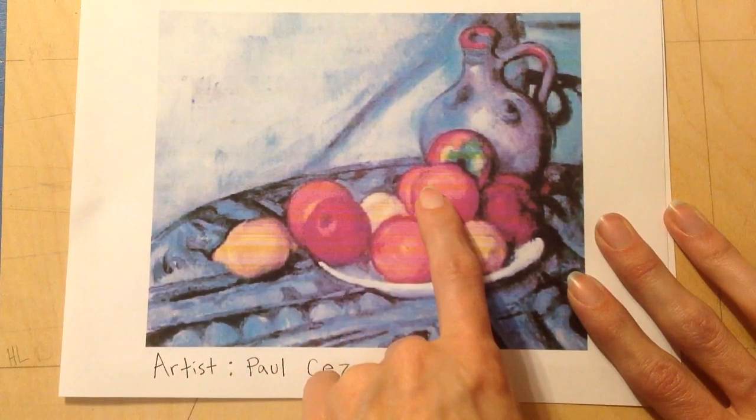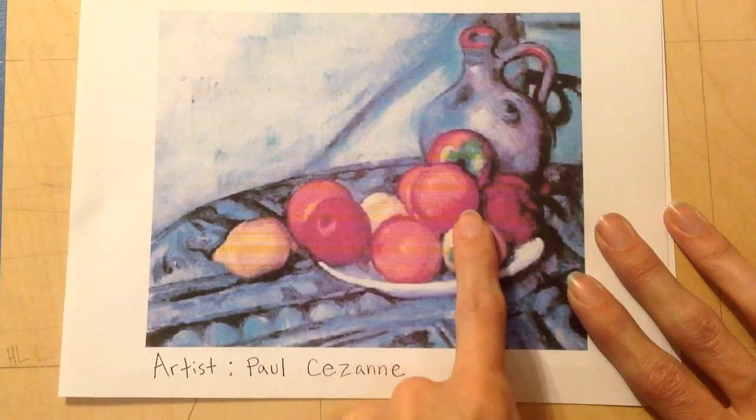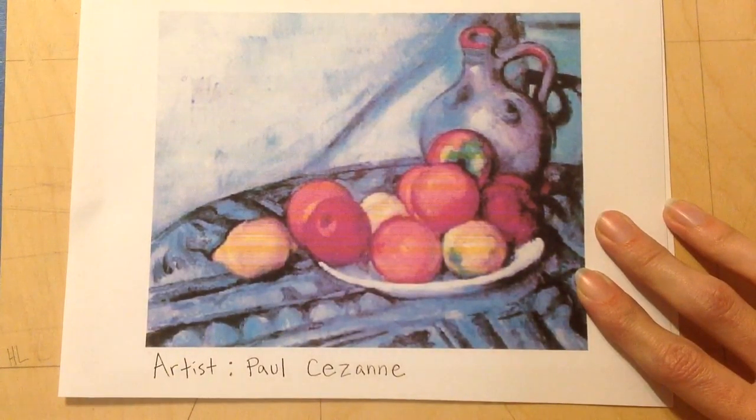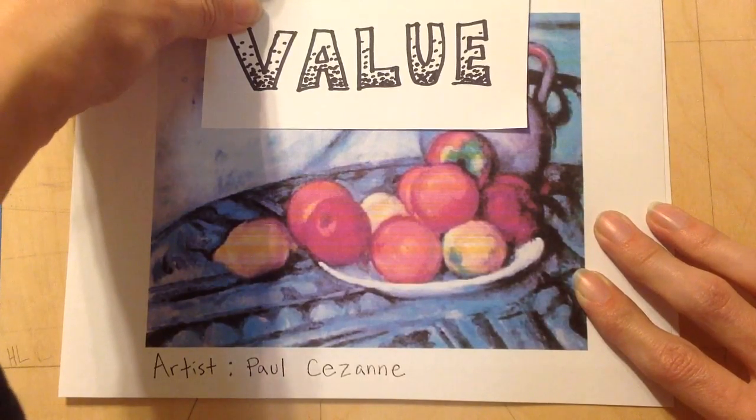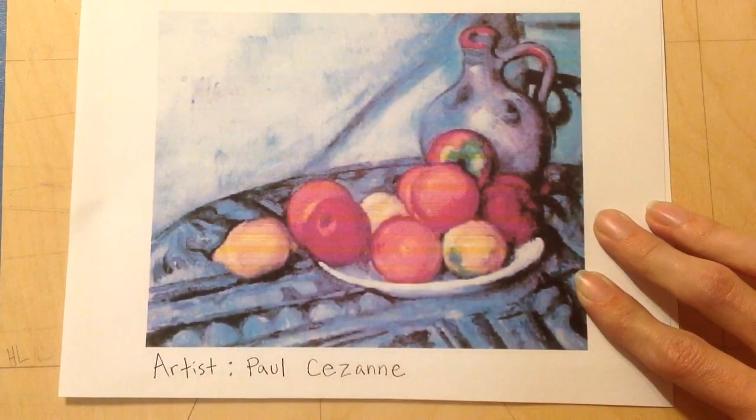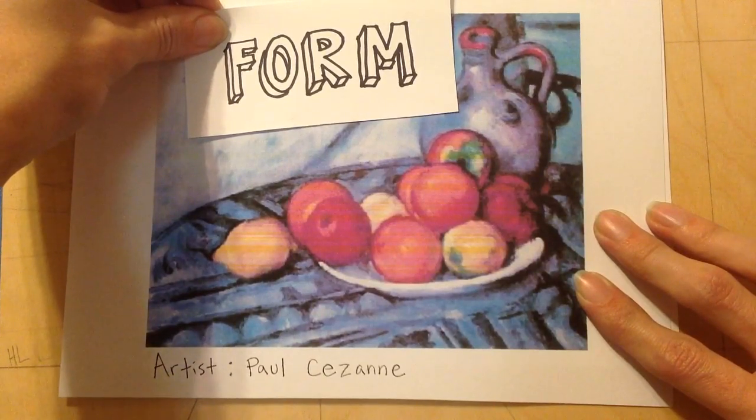And you can see where it's lighter, medium, and darker. That is the value. The light, medium, and dark. And the form was the sphere.